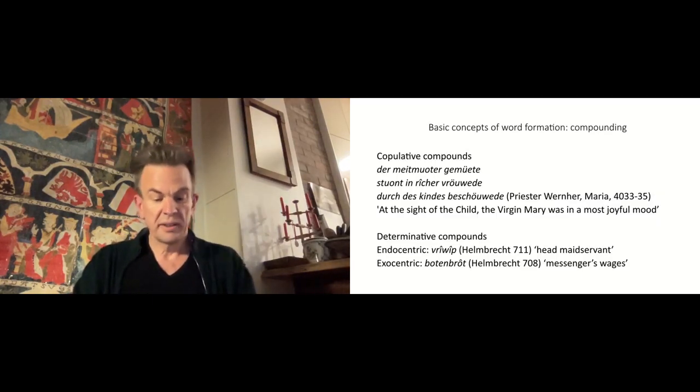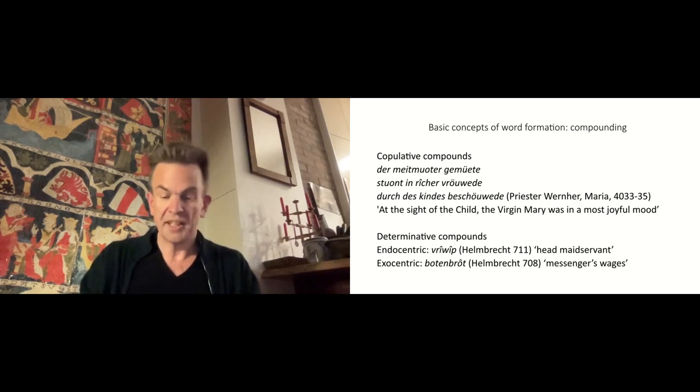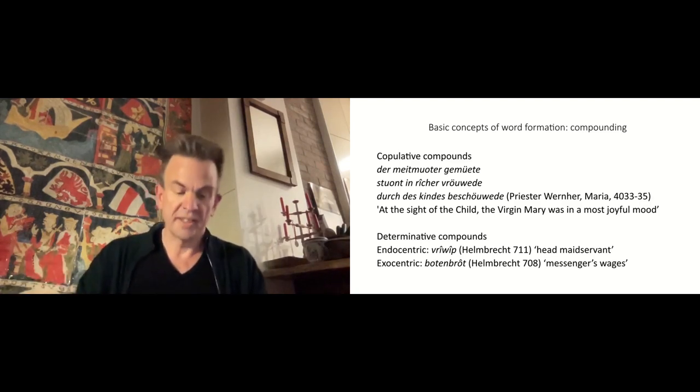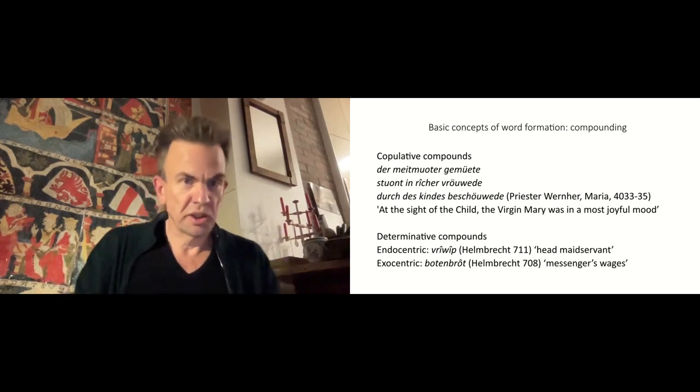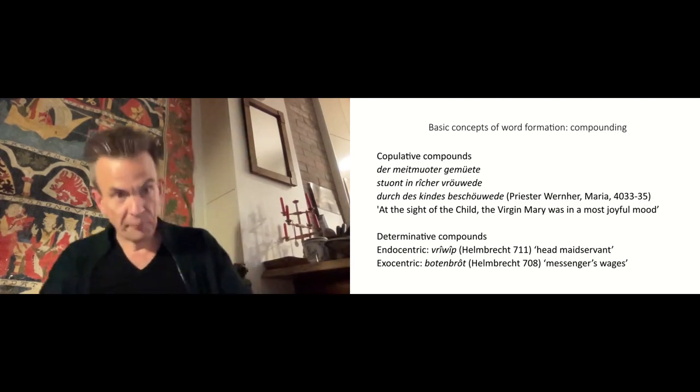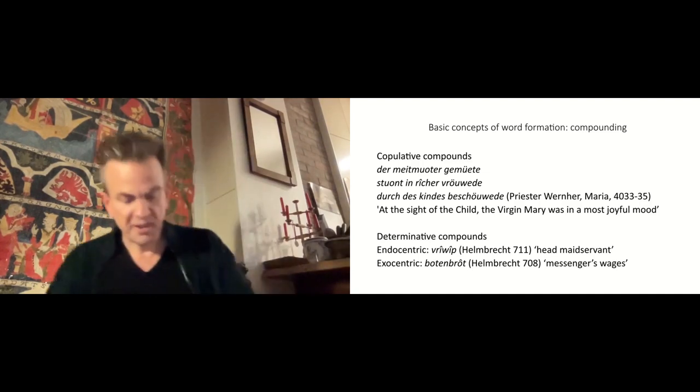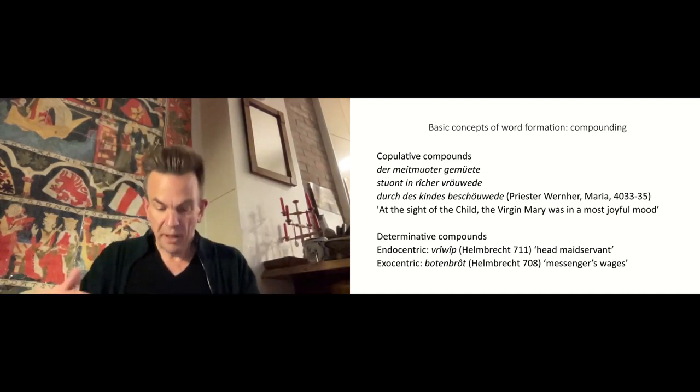In the field of compounding, a distinction between two forms can be made. The first are copulative compounds made between compounds of equal constituents, such as maget-muoter, virgin and mother, attested in Priester Werner's Maria from the early 13th century. The other type is the determinative compound, where there is a dependent relationship between the constituents. These can also be subdivided according to their semantics.